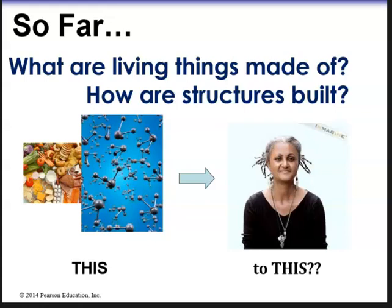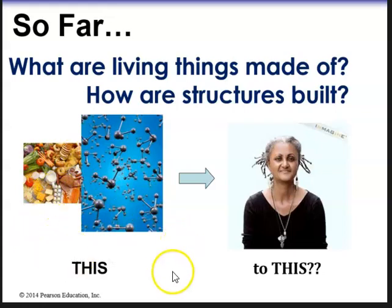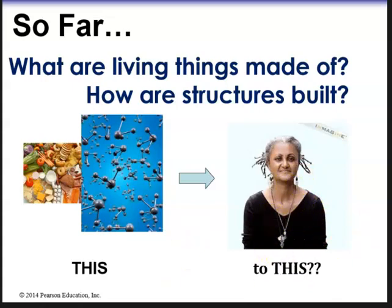So far in the last couple of chapters we've learned about the properties of life and the basic building blocks — the basic elements that make us who we are. We've talked about atoms and elements. So we went from the basic building blocks and now we're slowly building on to the components that make us humans, that make us who we are.